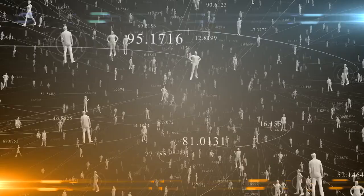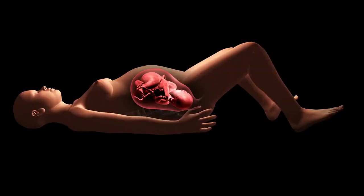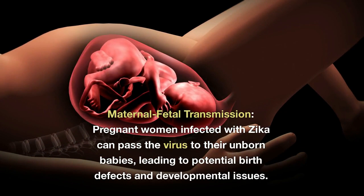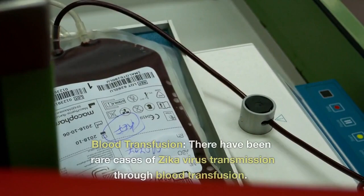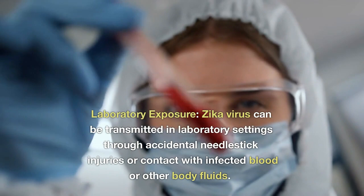Other modes of virus transmission include: Sexual transmission — Zika virus can be transmitted through sexual contact with an infected individual. Maternal-fetal transmission — pregnant women infected with Zika can pass the virus to their unborn babies, leading to potential birth defects and developmental issues. Blood transfusion — there have been rare cases of Zika virus transmission through blood transfusion. Laboratory exposure — Zika virus can be transmitted in laboratory settings through accidental needlestick injuries or contact with infected blood or other body fluids.